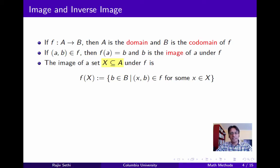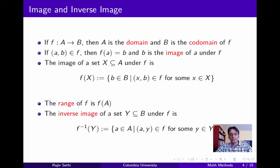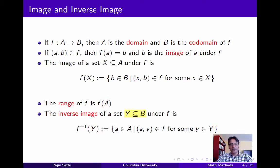If we have a subset X of the domain, then the image of X is the set of all points in B that are images for some point in X. The range of the function is just the image of the domain. The inverse image of a subset Y of the co-domain is the set of points in the domain whose images lie in Y. The inverse image may or may not be a function — we'll get back to this point in a minute.